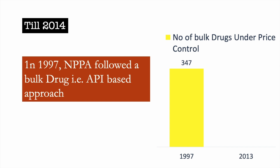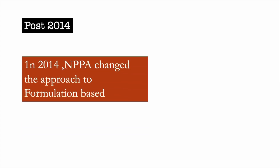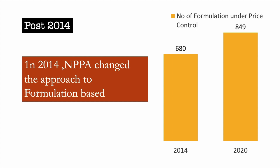In 1997, there were 347 APIs in this list. In 2013, there were 74 APIs. In 2014, NPPA changed the approach from API-based to formulation-based. In 2014, the number of formulations under price control was 680. And as of 2020, the number is 850. That means the number of drugs under price control is going up, which is a problem for the Indian pharmaceutical industry from an investor's point of view.